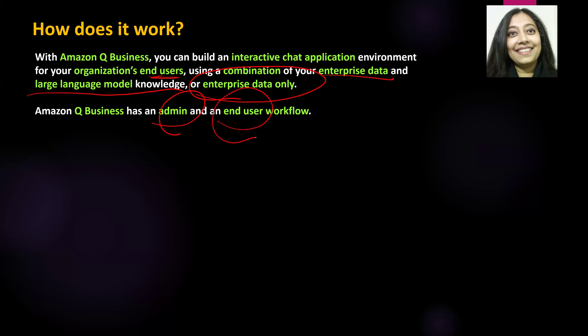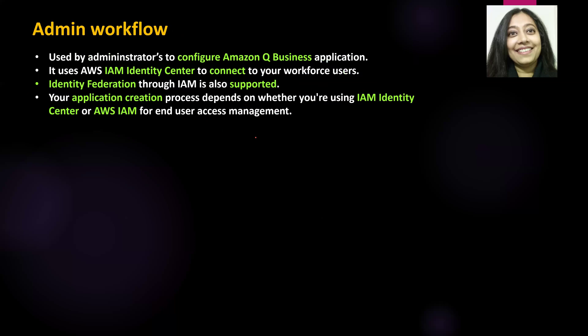Let's look at these two workflows. Admin workflow — as the name suggests, it is used by administrators to configure the Amazon Q Business application. Behind the scenes, it generates permission-aware responses and uses AWS IAM Identity Center to connect to your workforce users.